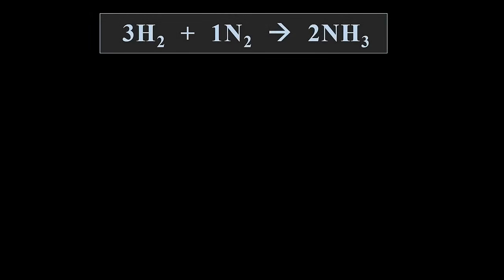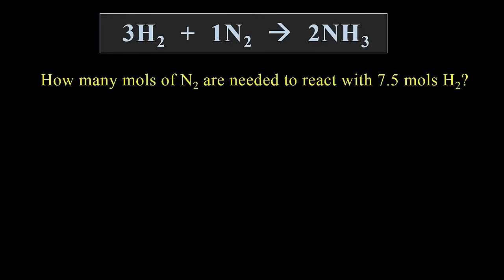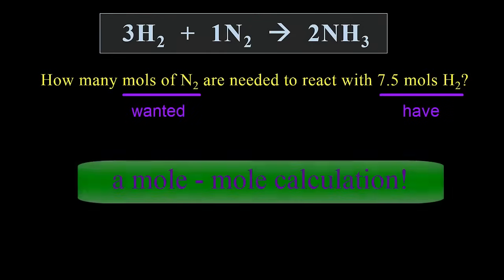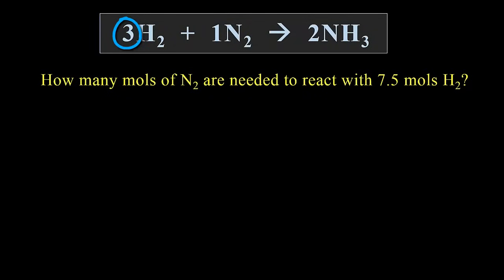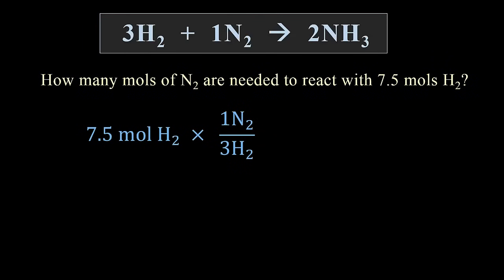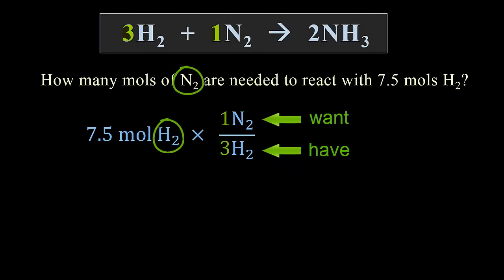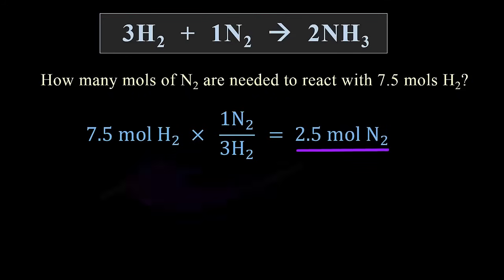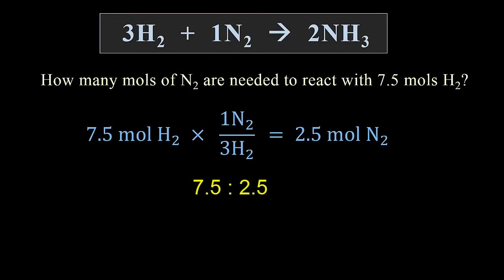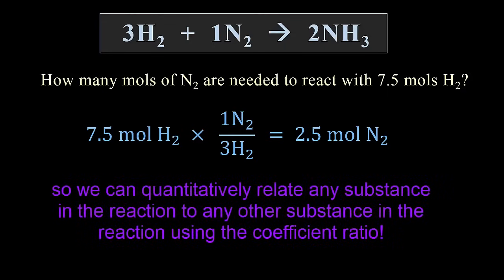Let's look at an example using the reaction of hydrogen and nitrogen. How many moles of nitrogen are needed to react with 7.5 moles of hydrogen? We use the coefficient ratio of 3 hydrogens to 1 nitrogen to determine the answer. The amount given is 7.5 moles of hydrogen, and we multiply that by a fraction representing the coefficient ratio — the 1 nitrogen to 3 hydrogen ratio — always putting on top what we want and on bottom what we have. This tells us that 2.5 moles of N2 will react with 7.5 moles of H2, which is a 3 to 1 ratio. We can quantitatively relate any substance in the reaction to any other using the coefficient ratio.